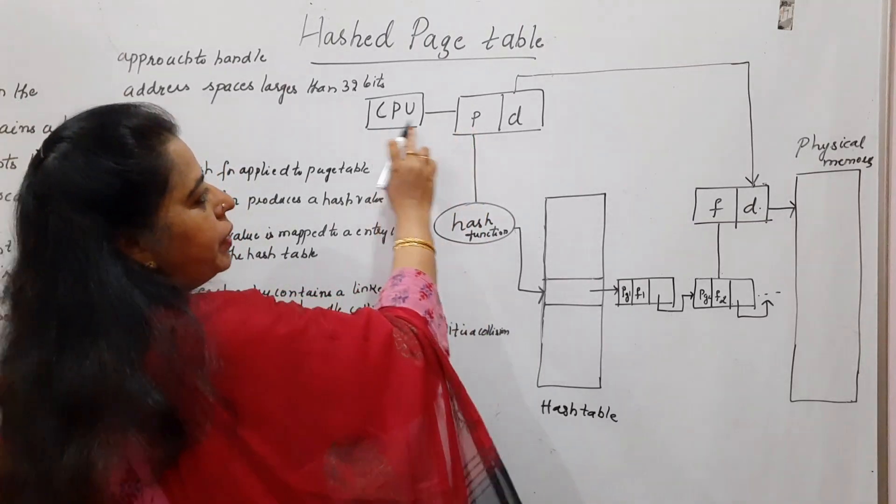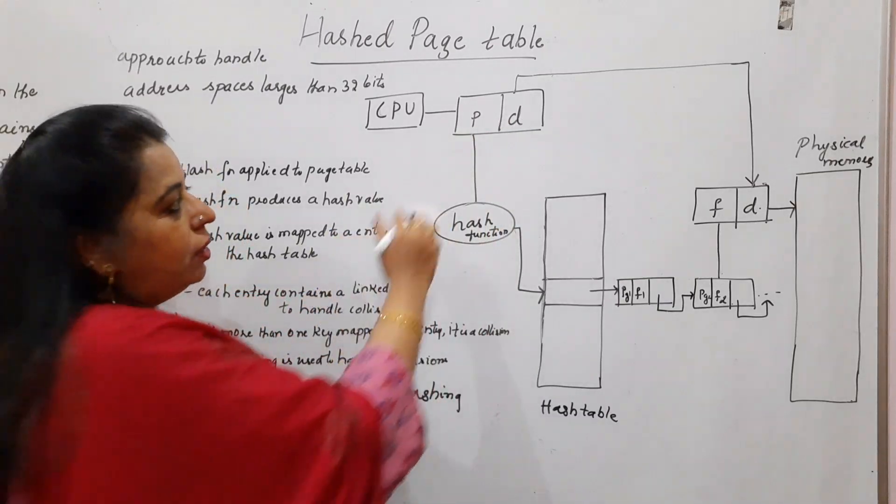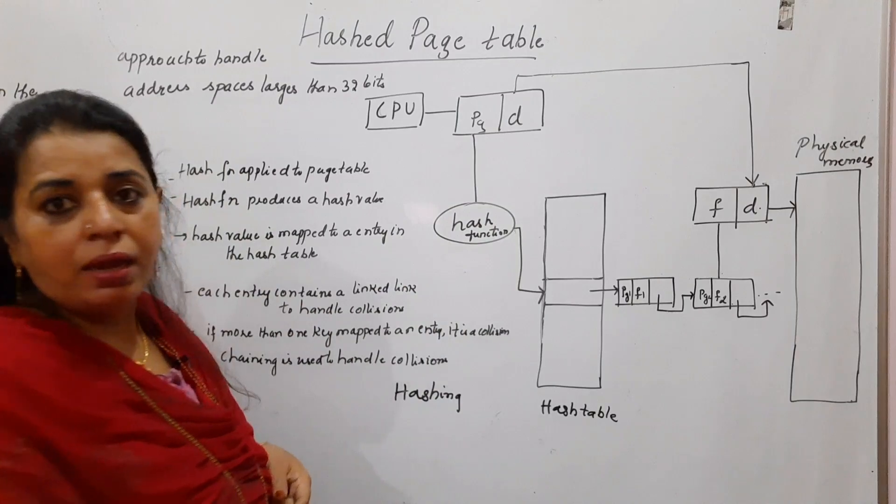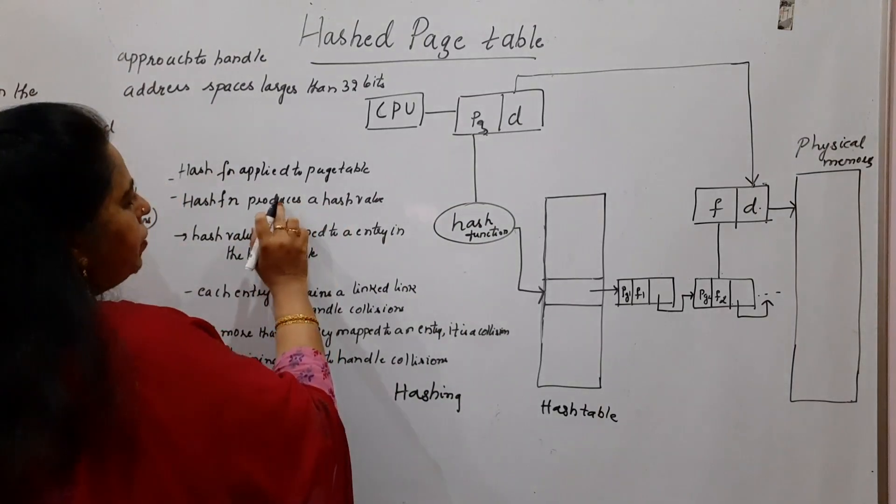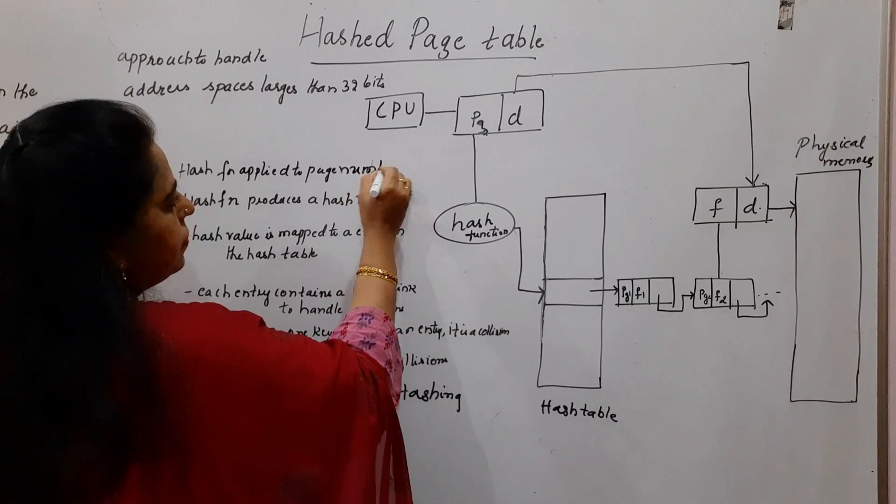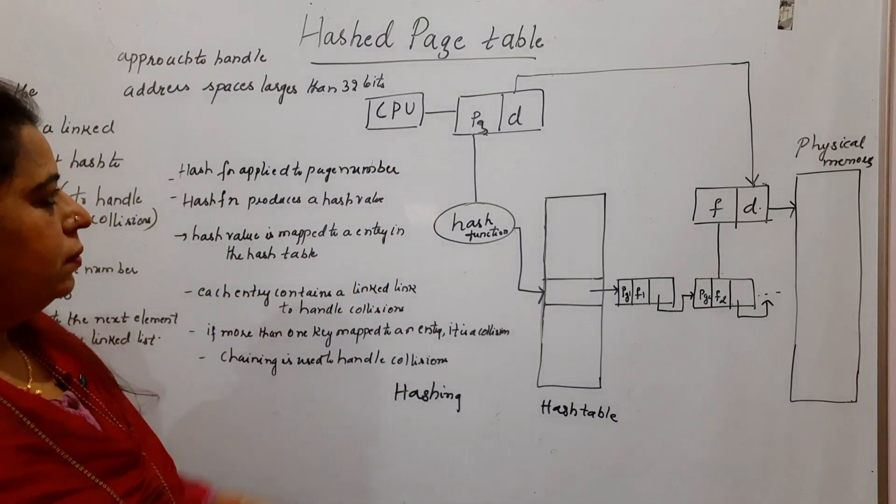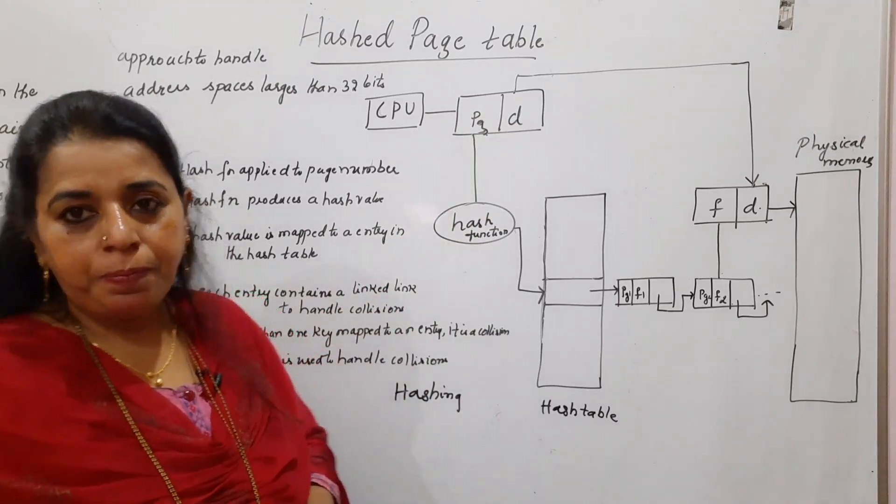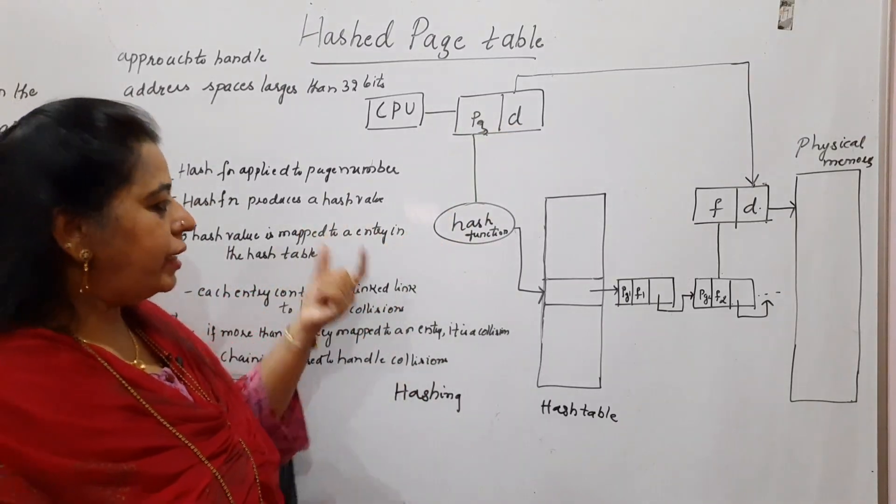So CPU always produces the page number and the offset. CPU always produces the logical address consisting of the page number and the offset. Actually, you are going to apply the hash function to the page number. Now you are going to use the hash function.